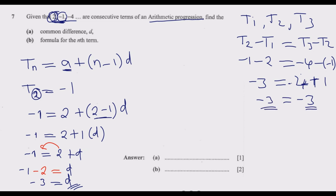Either way you still end up with negative 3, so choose whichever is comfortable for you. I would prefer the first approach as it is more straightforward, but if you want to remember the formula you can use the second alternative and still get the correct answer. Now we look at part (b) to find the formula.